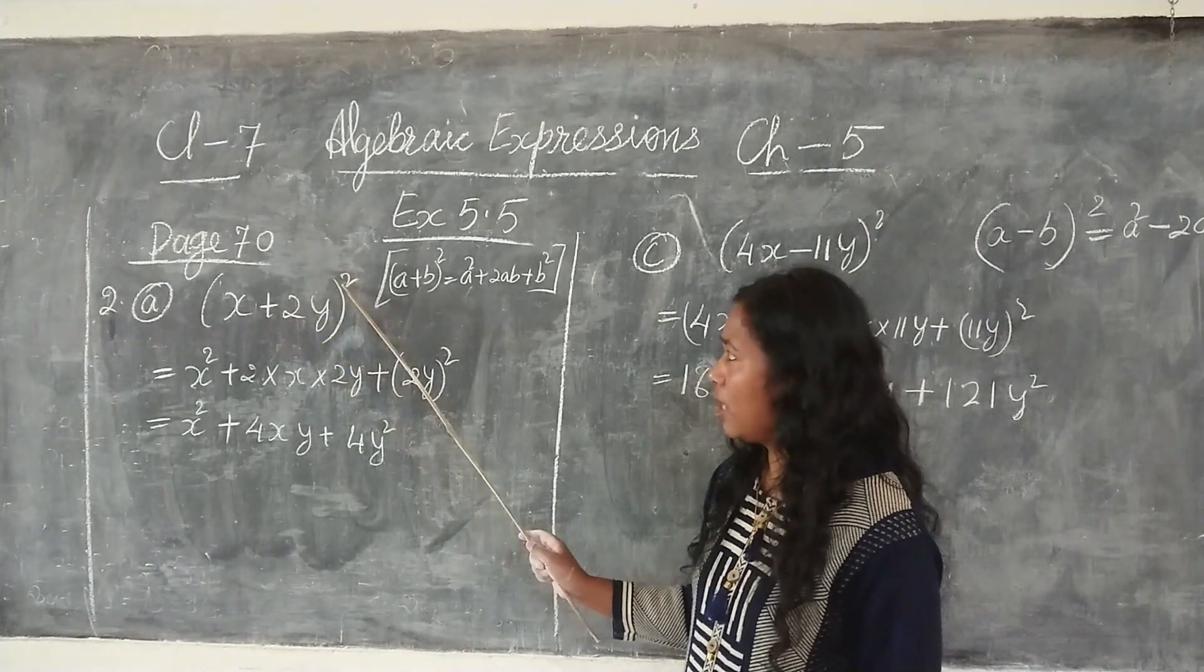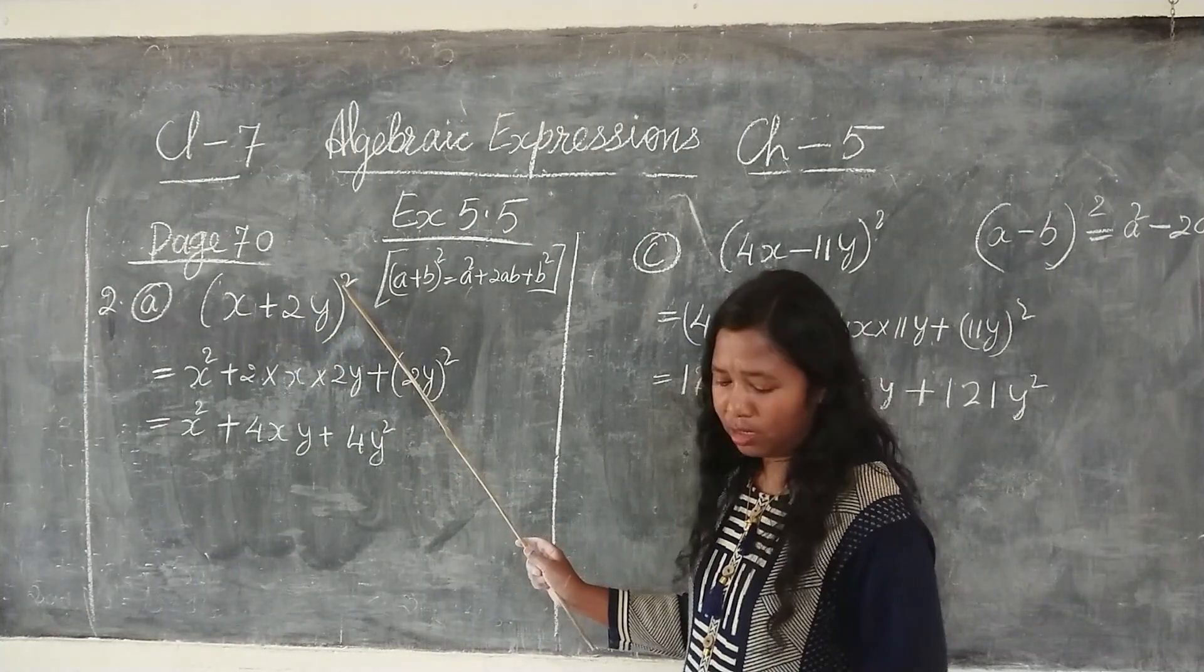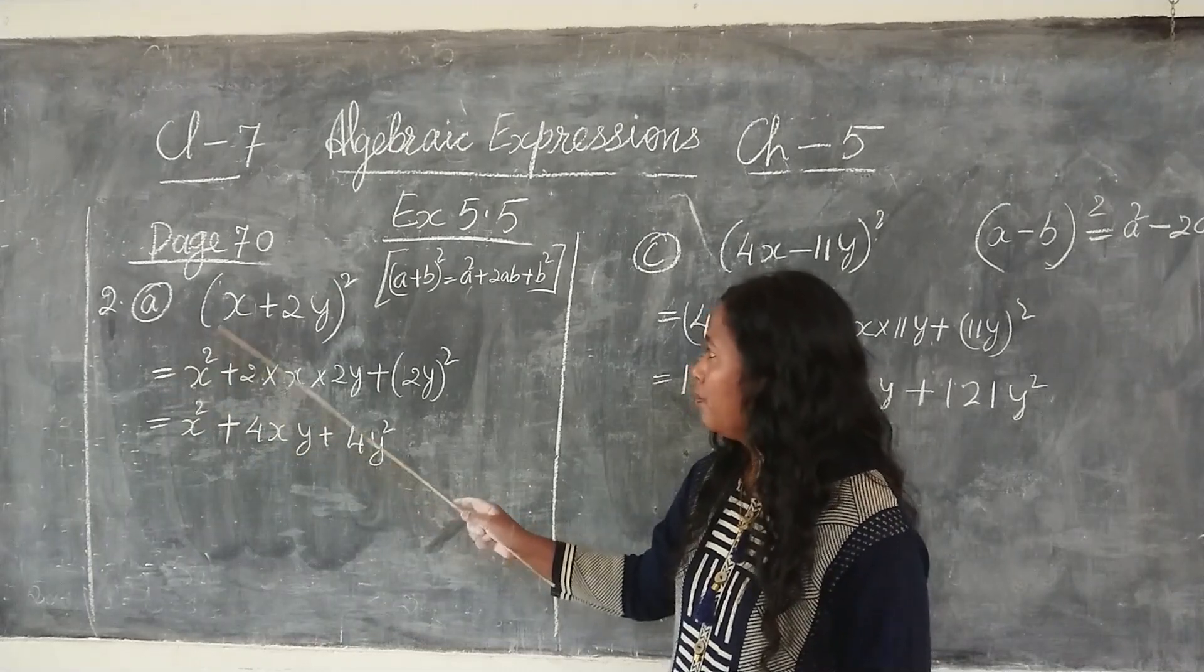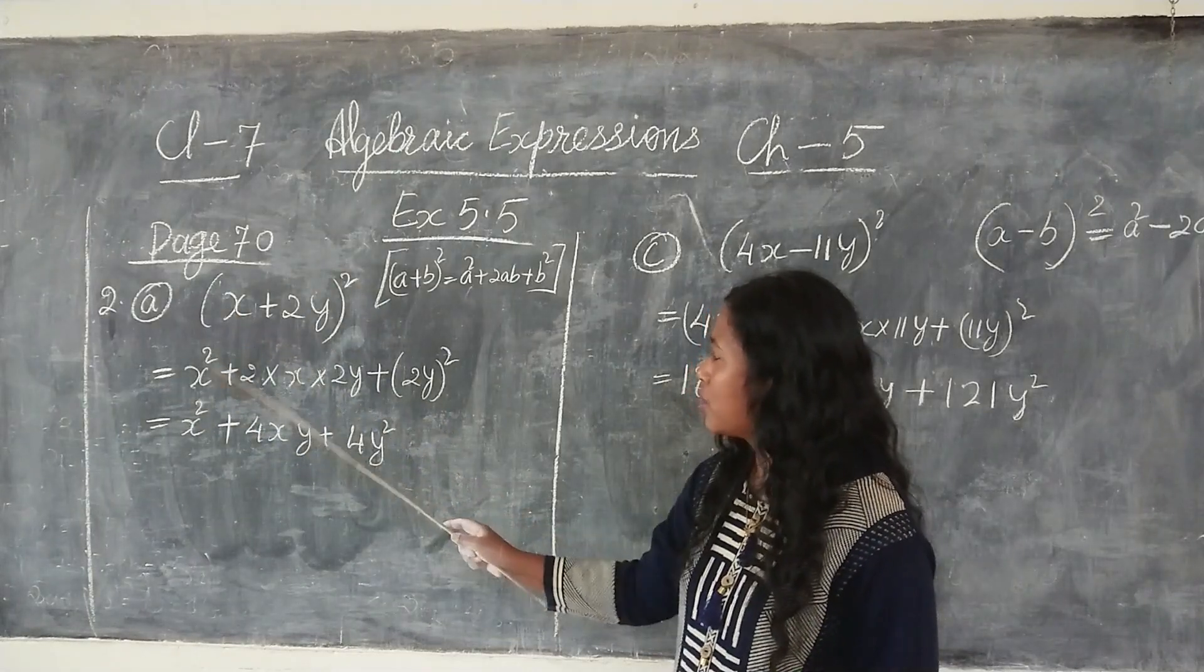Since it said find the square, so I'm going to put here square, whole square. So equal to x into square, x square.